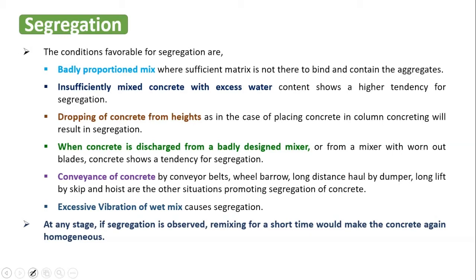The proportion is going to affect segregation. In a badly proportioned mix, if sufficient binder material is not available — that is, if cement added is less compared to the aggregate — because cement with water is the binding material for the coarse aggregate, it is not going to bind the aggregate, and the aggregate is going to separate from the rest of the matrix.